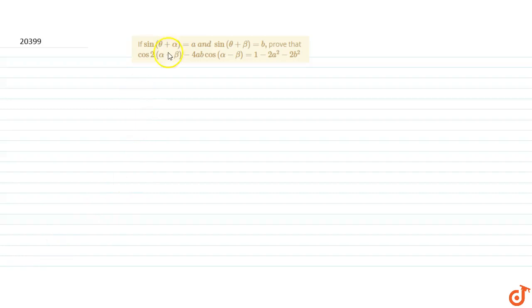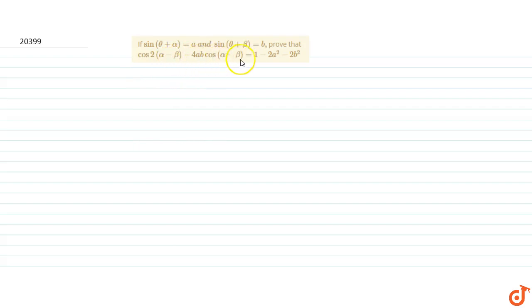In this question we are given that sin(θ + α) = a and sin(θ + β) = b, and what we have to prove is cos2(α - β) - 4ab·cos(α - β) = 1 - 2a² - 2b².